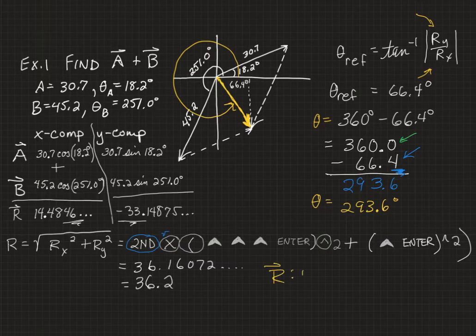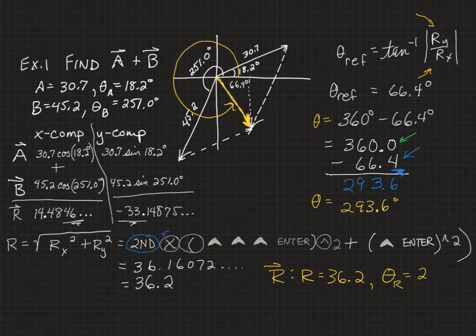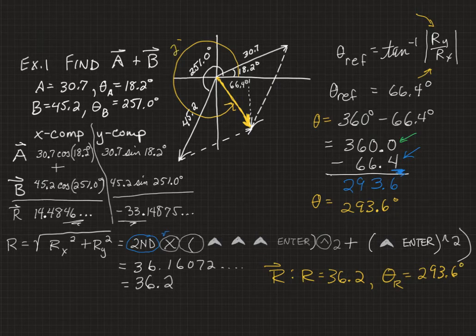Our resultant vector is the vector R, such that the magnitude of R equals 36.2, and theta sub R, the standard angle, is 293.6 degrees.